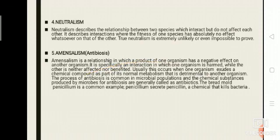Neutralism describes the relationship between two species which interact but do not affect each other. It describes an interaction where the fitness of one species has absolutely no effect whatsoever on that of the other. True neutralism is extremely unlikely or even impossible to prove.